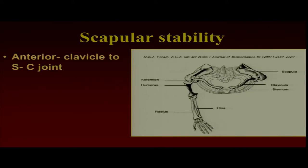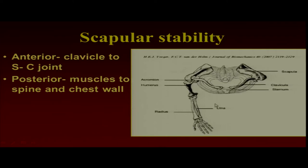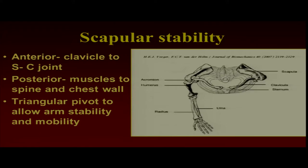You have anterior stability of the clavicle to the SC joint, as was mentioned yesterday about how important the SC joint is. Remember, posteriorly, to allow the mobility and the positioning and all these different positions of the scapula, it's all muscle. Therefore, you have to have good muscles. They have to be well balanced. They have to be attached the way they should be. And this allows this triangular pivot, which allows arm stability and, at the same time, mobility.